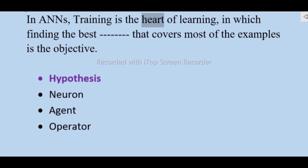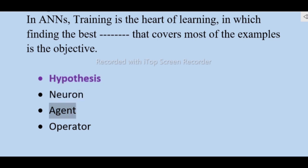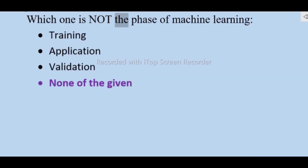In learning, training is the heart of learning in which finding the best hypothesis that covers most of the examples is the objective — not neuron, agent, operator. Which one is not a phase of machine learning? Training, application, validation — none of the given.